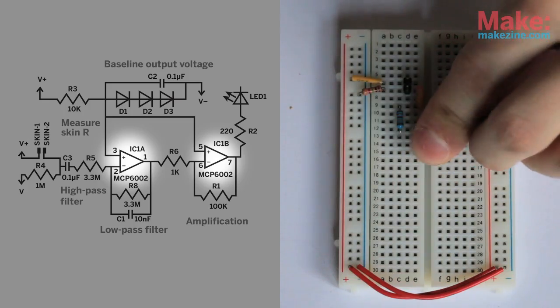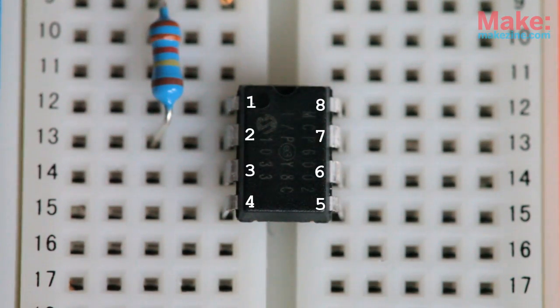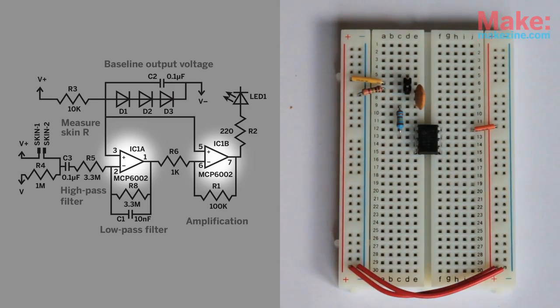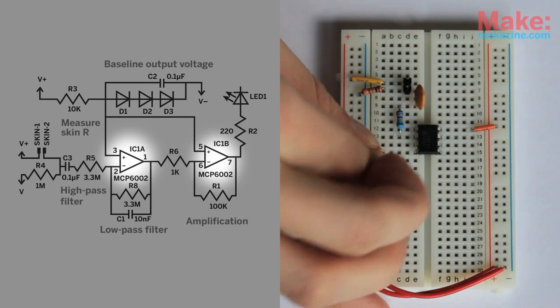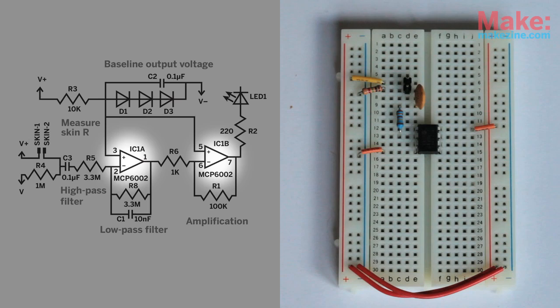This connects to our dual op-amp chip, which amplifies the signal. Remember that when you place the IC with the notch at the top, the pins are numbered this way. The op-amp chip needs power as well, so connect pin 4 to ground and 8 to positive. This is not shown on the schematic, but can be found on the op-amps data sheet.